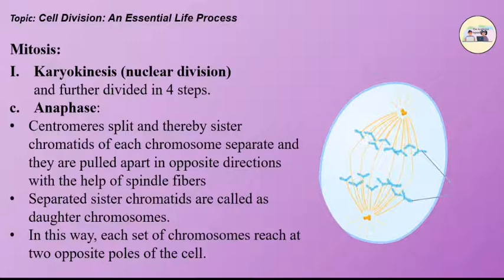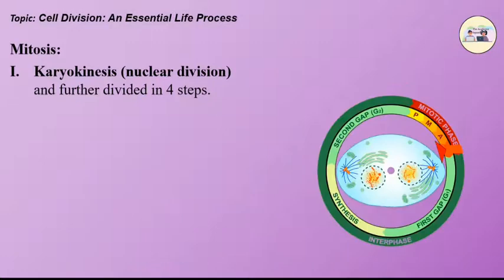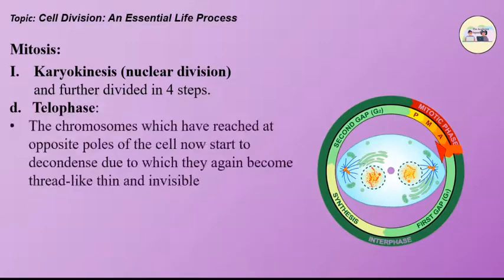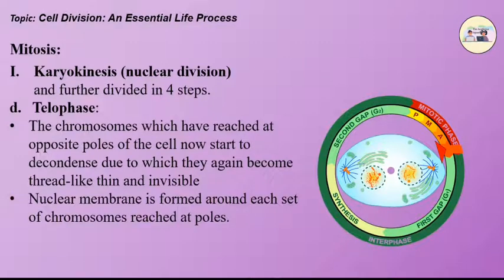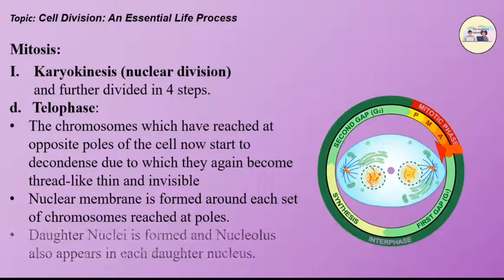The chromosomes which have reached the opposite poles of the cells now start to decondense, due to which they again become thread-like and thin and invisible. A nuclear membrane is formed around each set of chromosomes at the poles. Daughter nuclei are formed and a nucleolus also appears in each daughter nucleus.